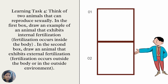For Learning Task 4, think of two animals that can reproduce sexually. In the first box, draw an example of an animal that exhibits internal fertilization — fertilization occurs inside the body. In the second box, draw an animal that exhibits external fertilization — fertilization occurs outside the body or in the outside environment.